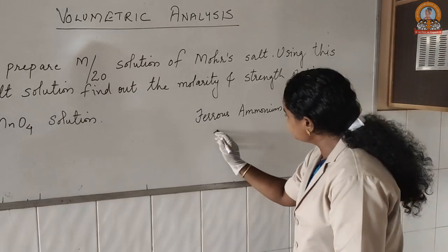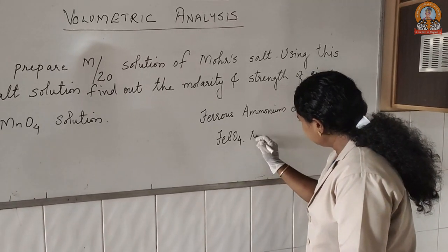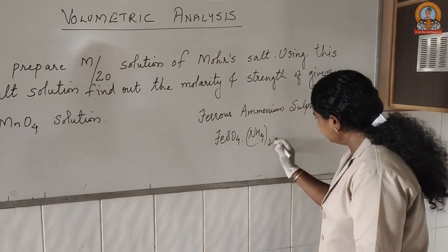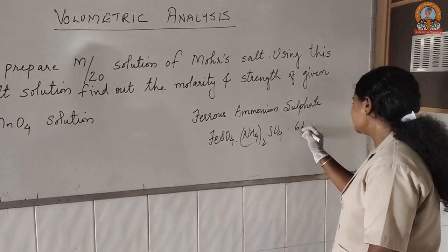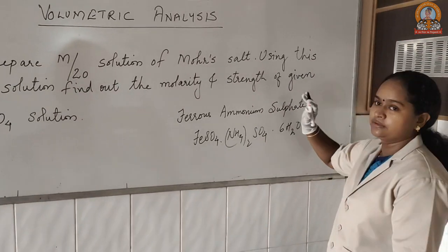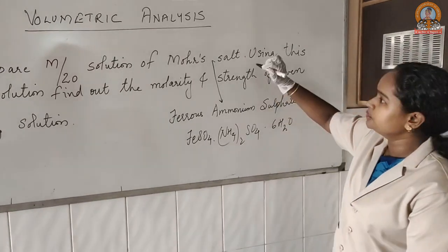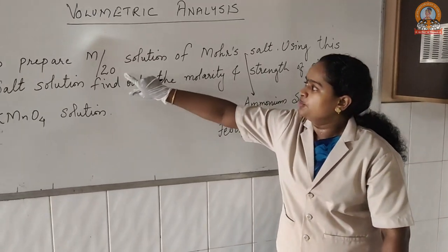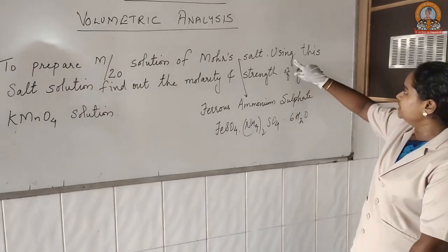The formula is FeSO₄·(NH₄)₂SO₄·6H₂O. This is water of crystallization. This is Mohr's salt. We are going to prepare the standard solution of Mohr's salt that has molarity 1/20.